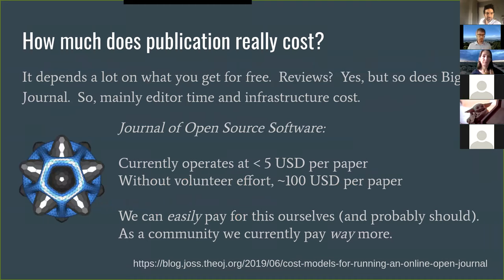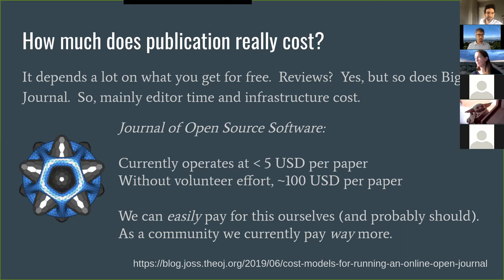How much does it cost to actually publish a paper? A case study is the Journal of Open Source Software. The reviews are typically free — just as the big publishers get reviews for free — so it mainly comes down to editing time and infrastructure costs. The Journal of Open Source Software has a blog outlining their costs and they currently operate at less than five US dollars per paper. Even without volunteer effort, they calculate numbers of around $100–150 US dollars per paper. We can easily pay for that ourselves — because as a community, we currently pay way more than that. Open access papers can cost on the order of $5,000 per paper nowadays, plus subscription costs.